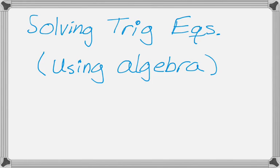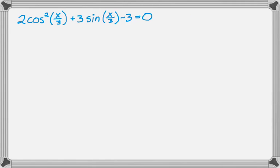In this video we're going to talk about solving trig equations using algebra and some of the fundamental identities. The first question we have is 2 cosine squared of x over 3 plus 3 sine of x over 3 minus 3 equals 0. I can change cosine squared into sine squared by using cosine squared equals 1 minus sine squared.